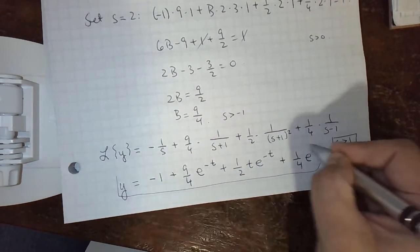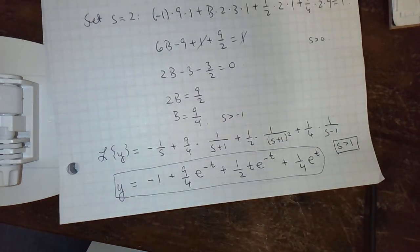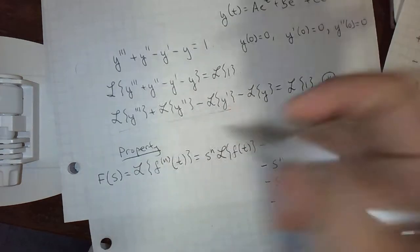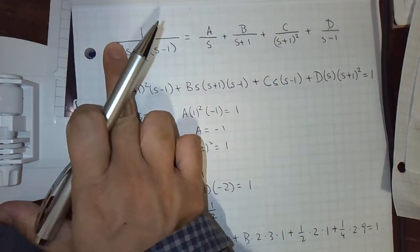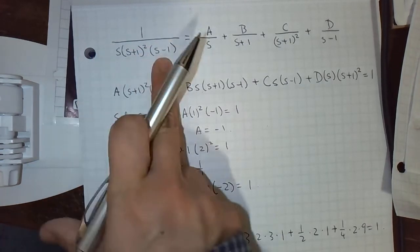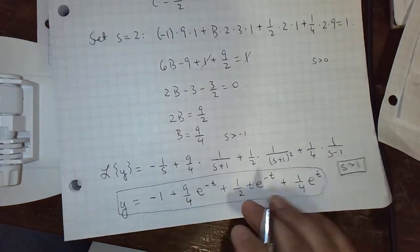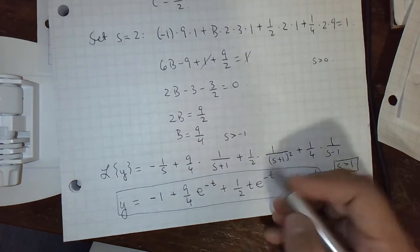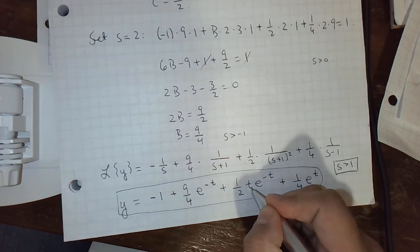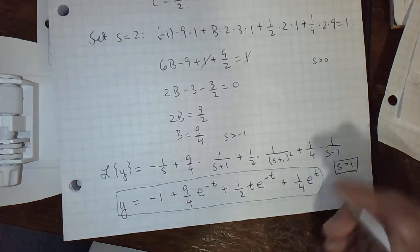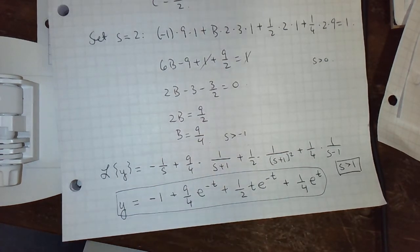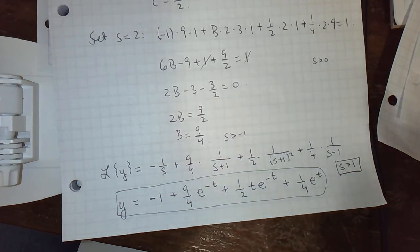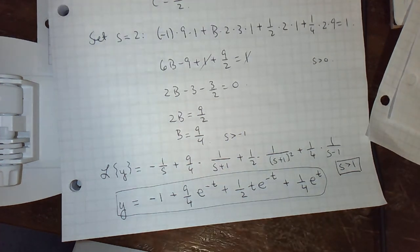So the solution is y equals negative 1 plus 9/4·e to the negative t plus 1/2·t·e to the negative t plus 1/4·e to the t. This is the solution to our differential equation that we initially didn't know how to solve. The characteristic polynomial factored as (s plus 1) squared times (s minus 1) — the root of minus 1 was repeated, so we had a t factor in one term. The root of 1 was not repeated, so that was normal. It looks like an analog of the method of undetermined coefficients can apply here.